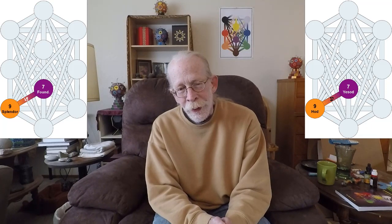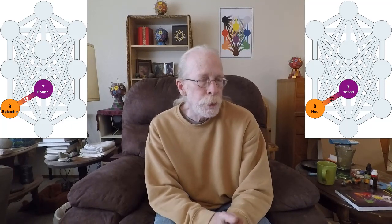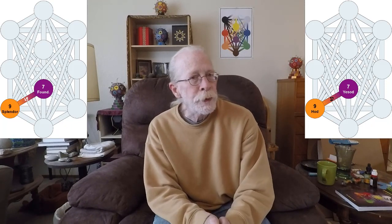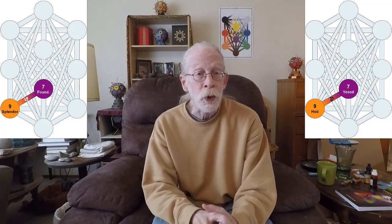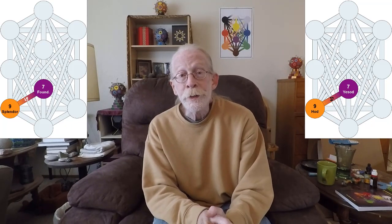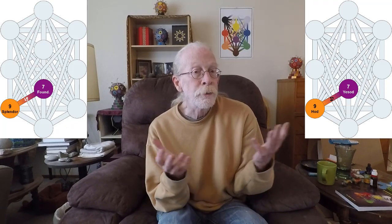The word Ayin in Hebrew has two distinct meanings. The first is 'eye' — E-Y-E — the eye that one looks out of. And the other is 'spring,' a spring of fresh water emerging from the Earth.